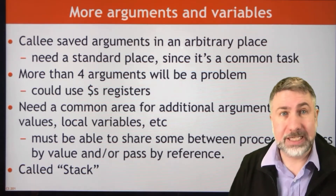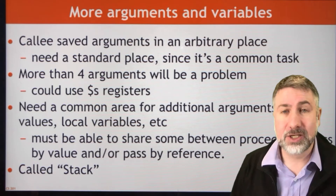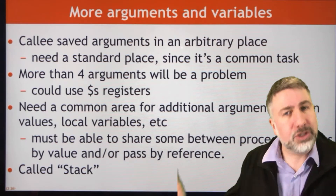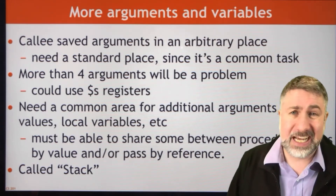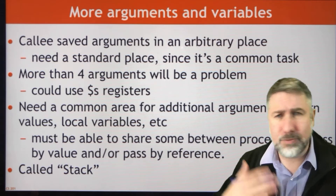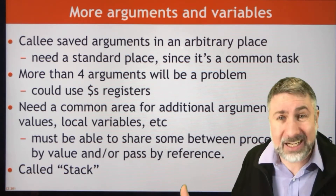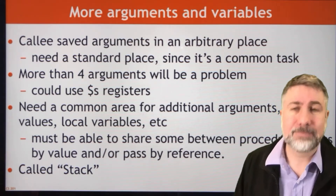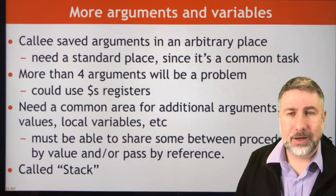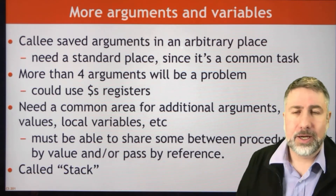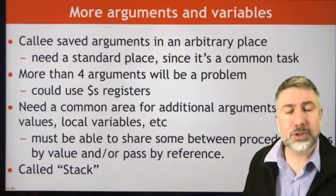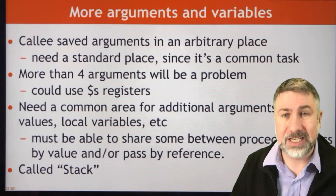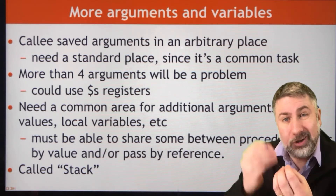One thing we could do is store arguments in a different place besides these registers. We can use S registers for the arguments and T registers for return values, but we're going to need S and T registers for our temporary working area whenever we're doing anything else inside the subroutine itself. So we're going to need some other place to store information to pass it back and forth between procedures — both to pass to procedures and return from procedures. We're also going to need some way to store and retrieve the return address in a procedure if we then want to call another procedure.